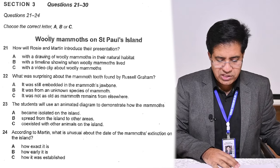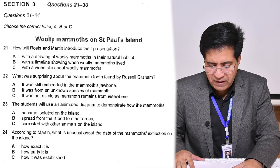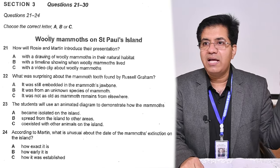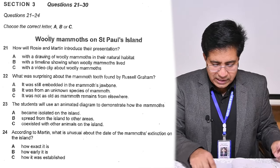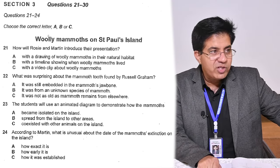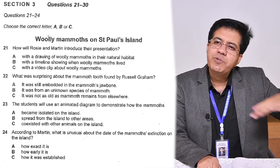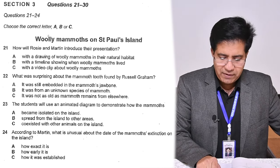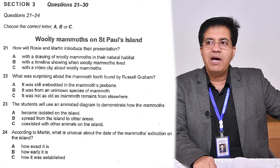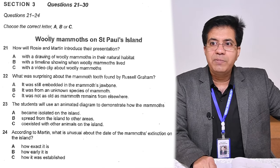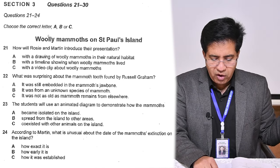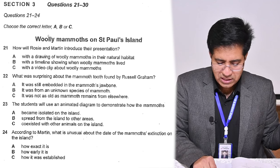Question 22: what was surprising about the mammoth tooth found by Russell Graham? Option A: embedded in the mammoth jawbone — the tooth was still in its jaw. Option B: from an unknown species of mammoth — underline 'unknown species.' Option C: not as old as mammoth remains — it wasn't as old as expected. So was the tooth still in the jaw, from an unknown species, or surprisingly recent?